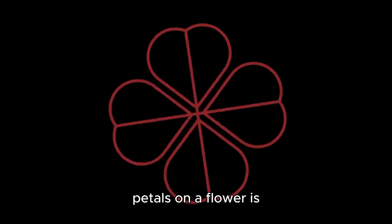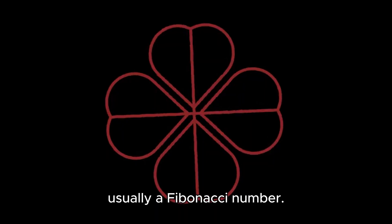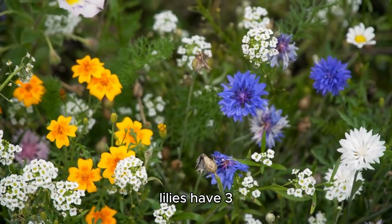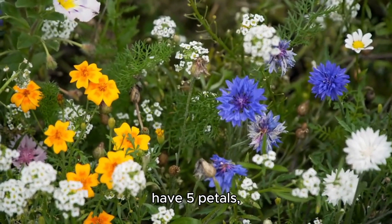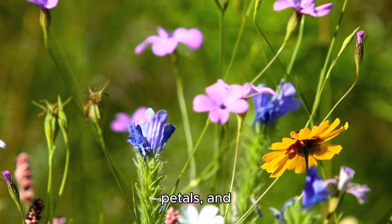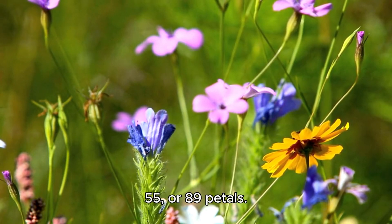The number of petals on a flower is usually a Fibonacci number. For example, lilies have three petals, buttercups have five petals, chicory have 21 petals, and daisies have 34, 55, or 89 petals.